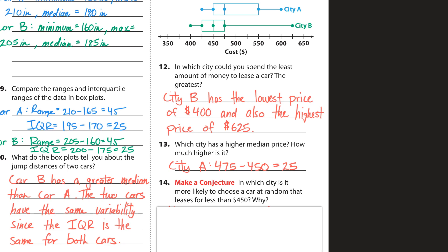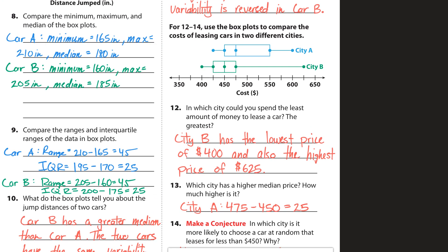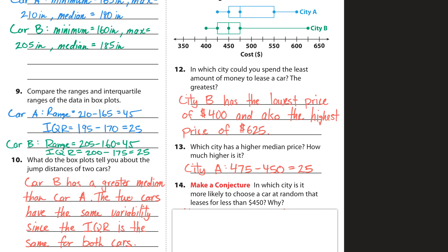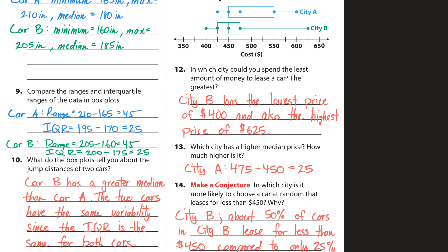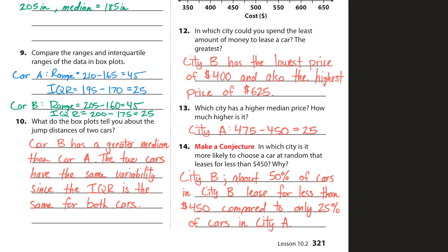Now let's make a conjecture: which city is more likely to have you randomly choose a car that leases for less than 450? City B would probably be a better chance because half of its data is below the median. Remember, 25% is in each half of the box, so together that's 50% of the data. City B has about 50% of cars leasing for less than 450, compared to only about 25% in city A.